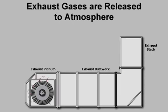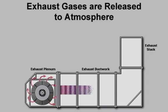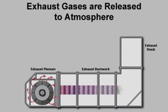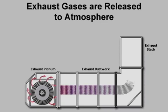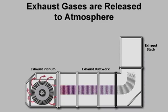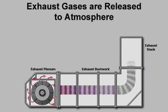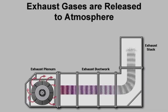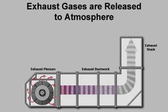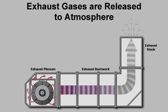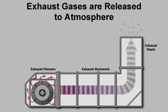The exhaust plenum and wrapper allow the exhaust gases to expand and cool and channel them into the exhaust ducting. The exhaust gases then flow through the exhaust ducting and are released into the atmosphere by the exhaust stack.